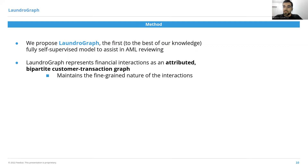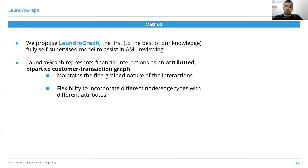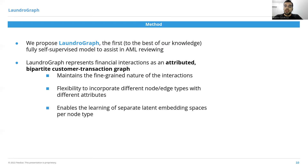There are a couple of benefits of using this type of graph. First, we maintain the fine-grained nature of interactions. Second, we can include additional nodes or edge types in the future with different feature sets — for example, a merchant node type or a card transaction node type. And finally, most importantly, it allows for the learning of separate latent embedding spaces per node type with different sets of learnable parameters.